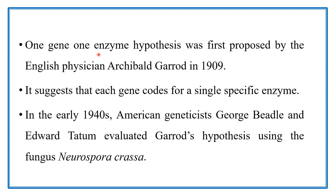This one gene one enzyme hypothesis was first proposed by English physician Archibald Garrard in 1909. He suggested that each gene codes for a single specific enzyme, but his work was unnoticed in his own time.